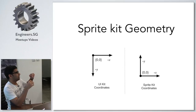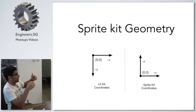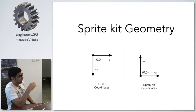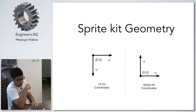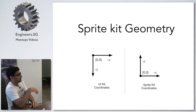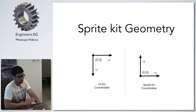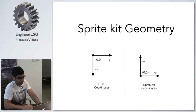In UIKit, the x and y coordinates start from the top-left corner of the device at (0,0). But in SpriteKit geometry, it follows the conventional mathematical graph, starting from the bottom-left corner. So all calculations are done from that point of view.